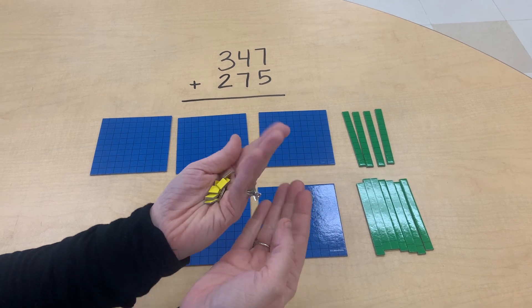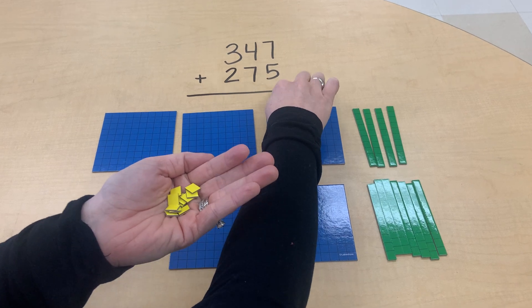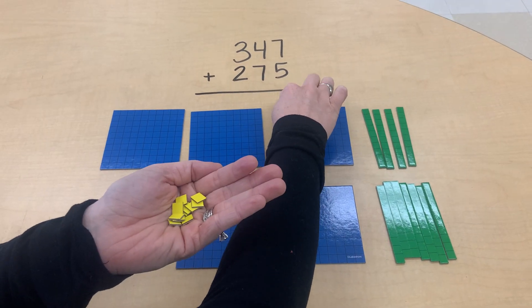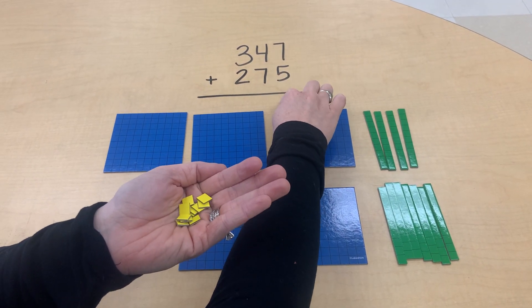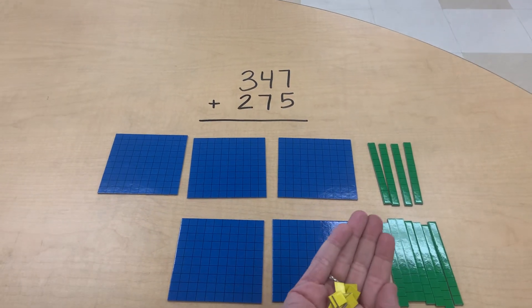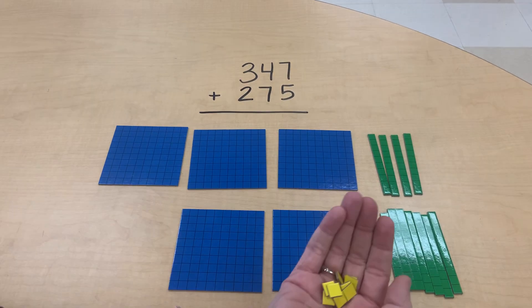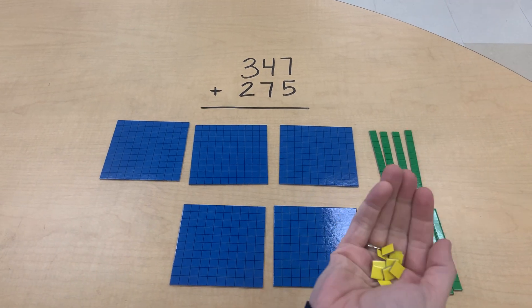So our students know that ten ones make a ten. We cannot put any number higher than nine in the ones place, so we cannot have twelve here. So what we can do is we can regroup.